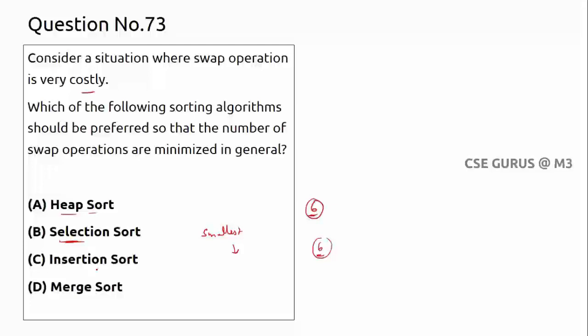In selection sort, the number of swappings is very less, though finding the minimum value is a separate concern. In insertion sort, you might find more swaps in some cases. In selection sort, swapping only happens in the outer loop, not the inner loop, so there is a chance of fewer swaps compared to other sorting techniques. I have detailed videos on all sorting techniques on my YouTube channel.